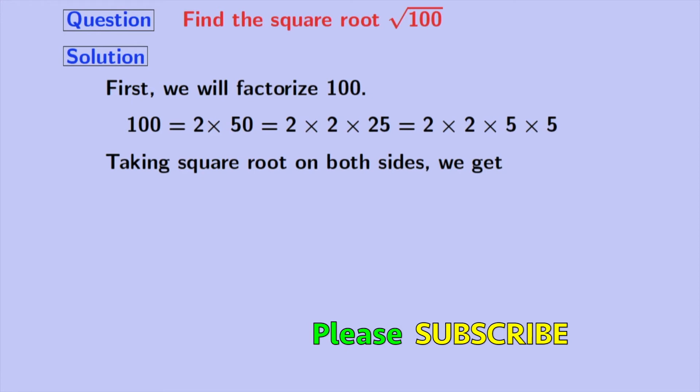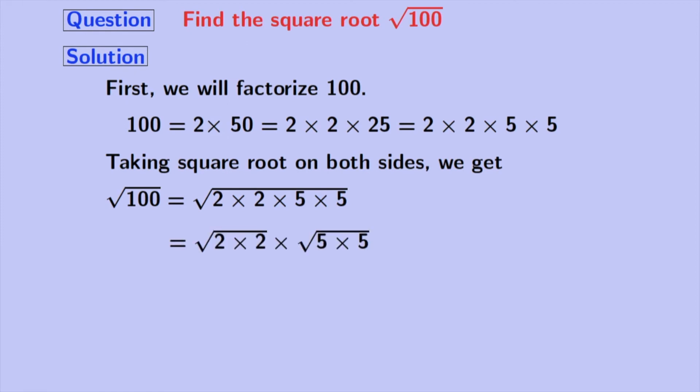Now, taking square root on both sides, we get square root of 100 is equal to square root of 2 times 2 times 5 times 5. That is equal to square root of 2 times 2, times square root of 5 times 5.